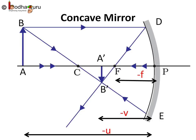Only in case of an object placed too close to the concave mirror, it produces an upright virtual image. In that case, v will be positive.